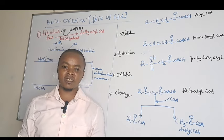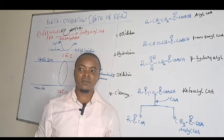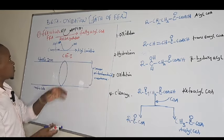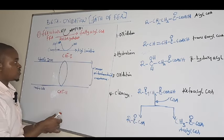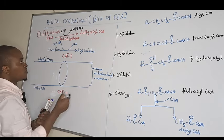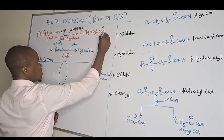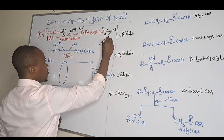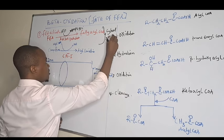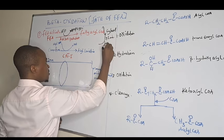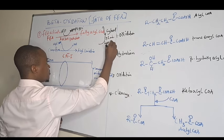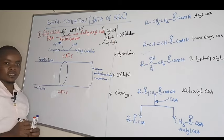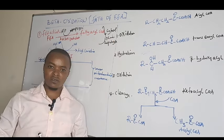This is the first step in beta oxidation, and it occurs in the cytosol of liver hepatocytes. That is step number one under beta oxidation.